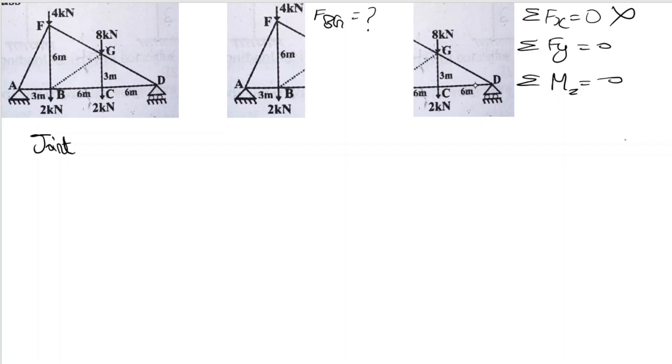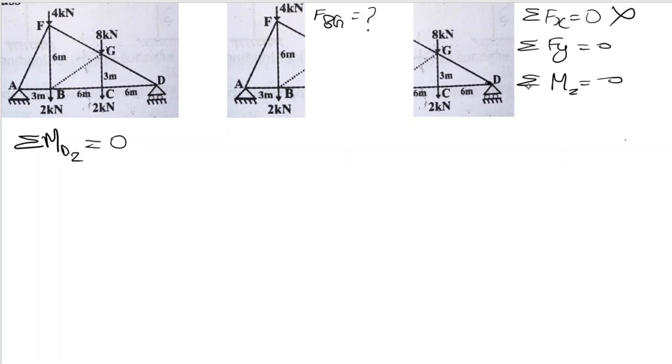Now we take the moment at point D. Since the unknown at D is the support reaction, if we put the moment at joint D we can eliminate those unknowns. We apply the moment equation: sum of moments at D equal to zero.